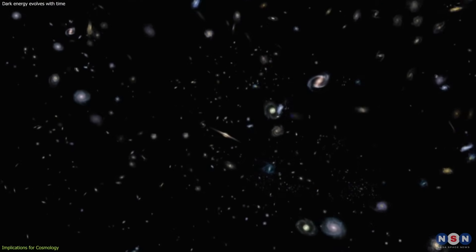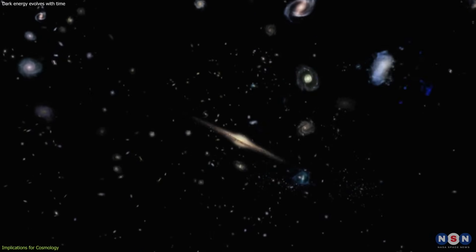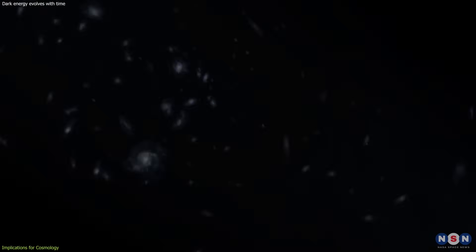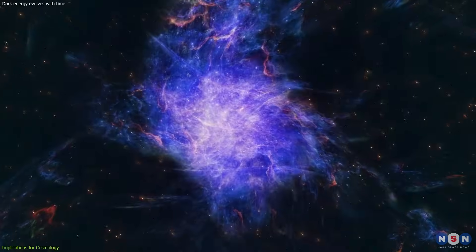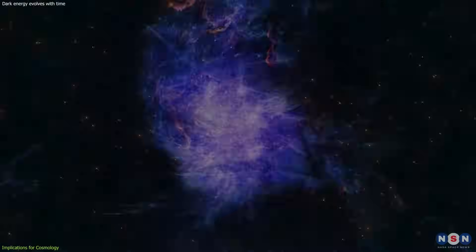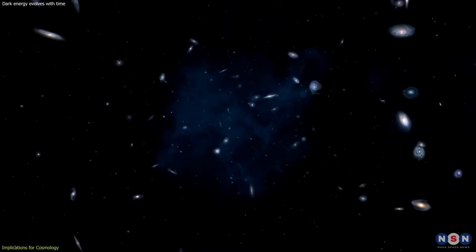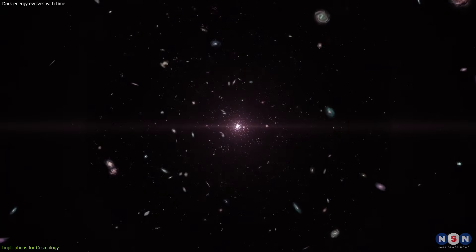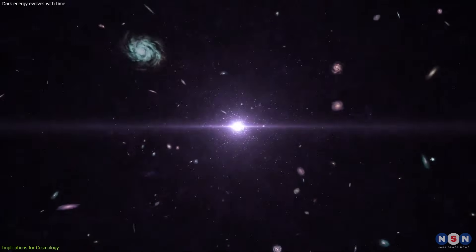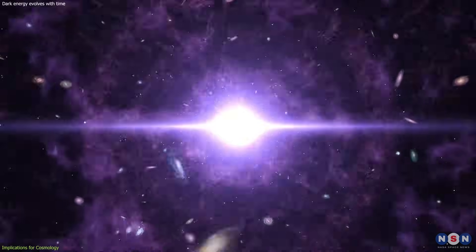Traditionally, cosmologists have predicted that the universe will continue to expand indefinitely, with galaxies drifting further and further apart. However, if dark energy is evolving, it could mean that the universe's expansion might slow down or even reverse in the future. This would lead to a radically different scenario for the end of the cosmos, potentially culminating in a big crunch, where the universe collapses back in on itself.